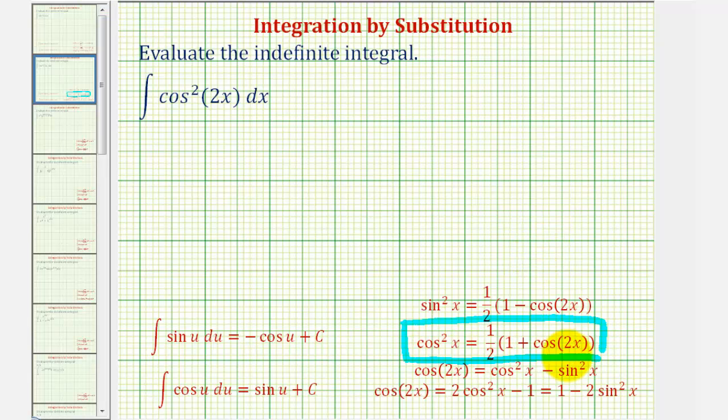Also notice when applying this identity, on the left side the angle is x, and on the right side the angle is 2x. So we double the angle when applying this power-reducing formula.